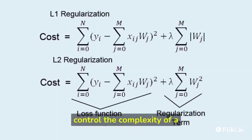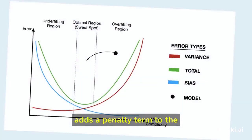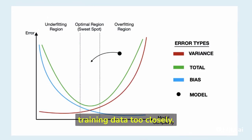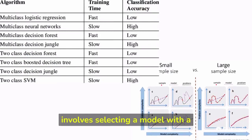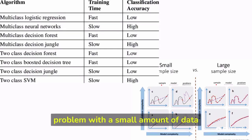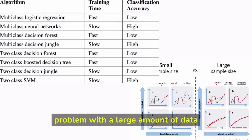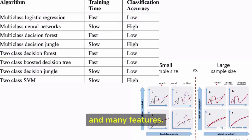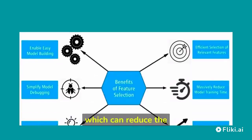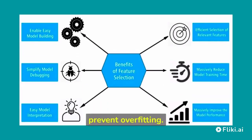There are several ways to control the complexity of a model. Regularization adds a penalty term to the loss function, which discourages the model from fitting the training data too closely. Model selection involves selecting a model with a suitable level of complexity for the problem at hand — for example, a simple linear regression model may be sufficient for a problem with a small amount of data and few features, while a more complex neural network may be required for large datasets with many features. Feature selection involves selecting a subset of the features to use in the model, which can reduce complexity and help prevent overfitting.